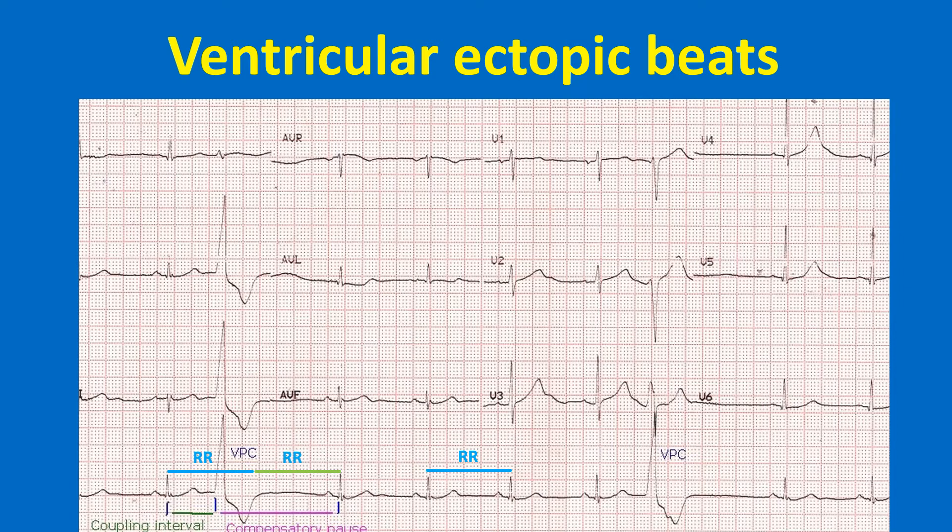It is usually followed by a full compensatory pause, meaning that the sum of the coupling interval and the compensatory pause will be equal to twice the regular sinus cycle length, marked as RR in the ECG.